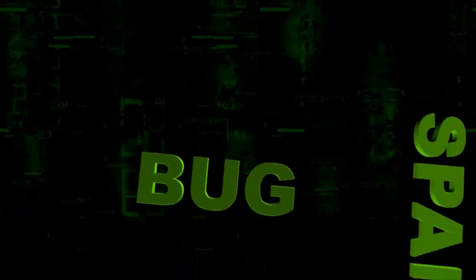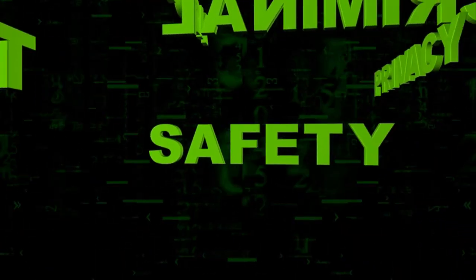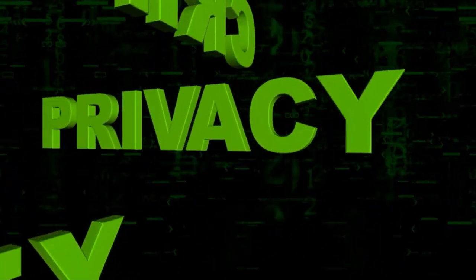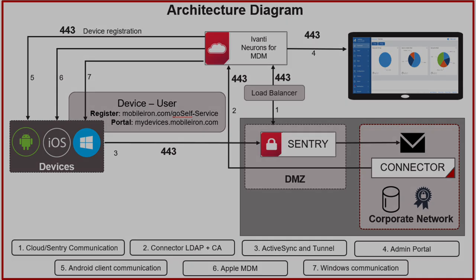Remote troubleshooting allows IT administrators to diagnose and resolve issues on users' devices without needing physical access. For example, Ivanti Neurons for MDM provides remote troubleshooting tools that enable IT admins to diagnose and fix issues from a central console. This feature can save time and reduce downtime by allowing IT staff to address problems quickly and efficiently. Remote troubleshooting tools can include remote screen sharing, diagnostic tools, and the ability to push configurations or updates to resolve issues.